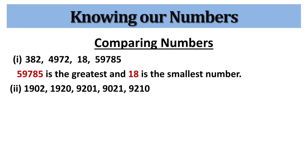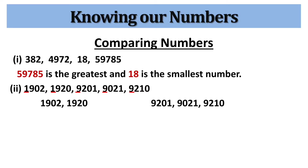In the second example, we have five numbers — all are four-digit numbers. Observe the digits at the thousands place. The digit at the thousands place is 1 in two numbers and 9 in three numbers. To find the smallest number, consider numbers with digit 1: 1902 and 1920. Both have the same digit at thousands place and hundreds place. At the tens place, one number has 0 and the other has 2. Since 0 is smaller than 2, 1902 is the smallest number.